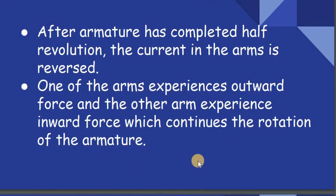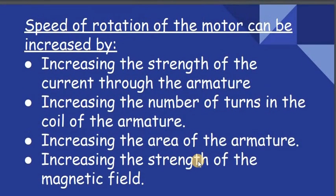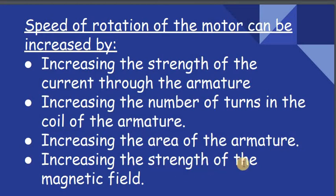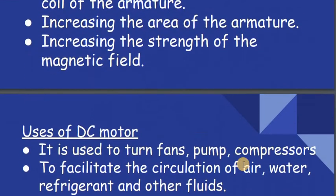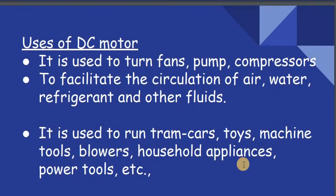We can increase the speed of rotation by increasing the strength of the current, by increasing the number of turns in the coil, by increasing the area of the armature, and by increasing the strength of the magnetic field. Uses of the DC motor include turning fans, pumps, and compressors, as well as running trunks, toys, machines, and household appliances.